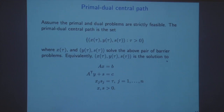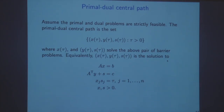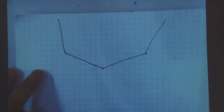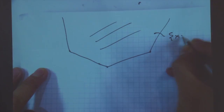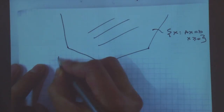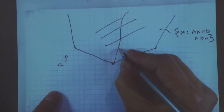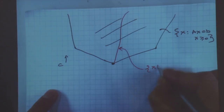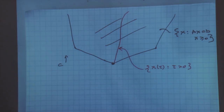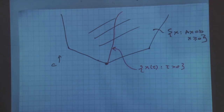There is a picture that always goes with this. If we think about our primal problem — x such that Ax equals b and x is greater than or equal to zero — the central path is a nice smooth curve, and that would be the set of points x(tau) for tau greater than zero. You have a similar picture in the dual space for the other two components y and s.